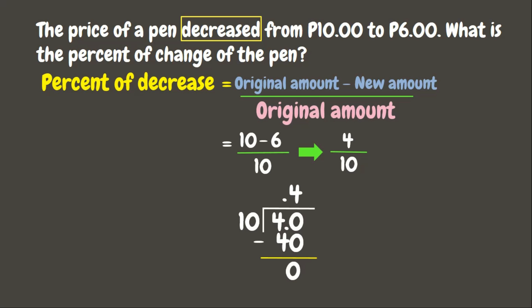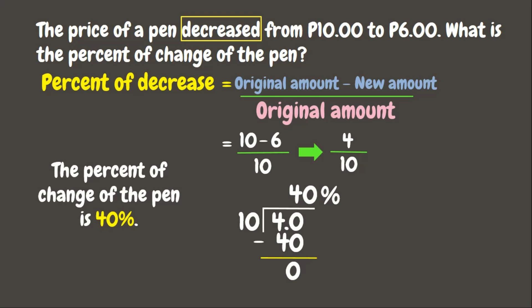We need to convert it into percent. Let's move the decimal point two times to the right and put zero in the empty place value. Don't forget to change the decimal point into a percent sign. Our answer is forty percent. This means that the percent of change of the pen is forty percent.